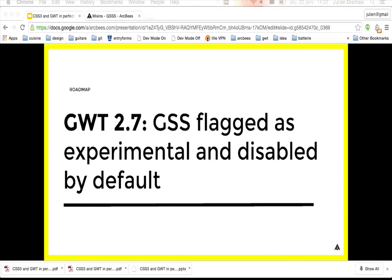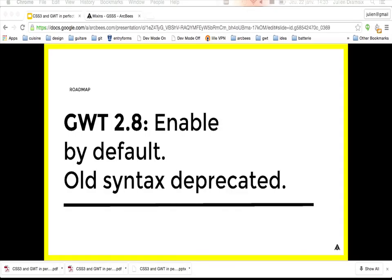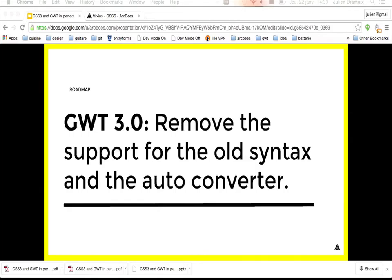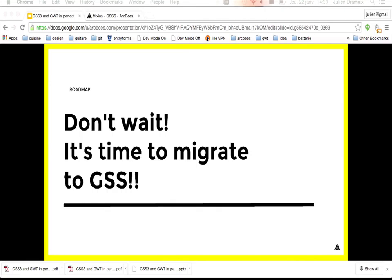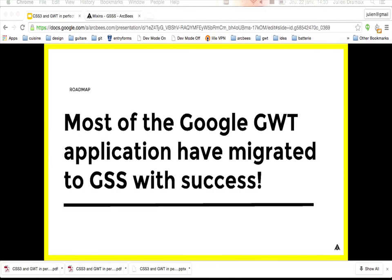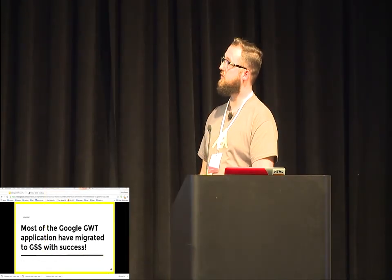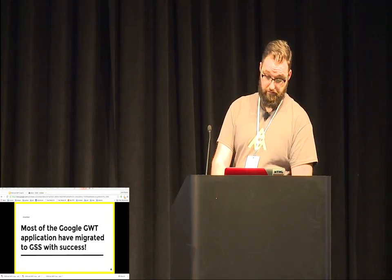The roadmap: GSS support was added in Grid 2.7, flagged as experimental and disabled by default. In Grid 2.8, GSS support will be enabled by default and the old syntax will be deprecated. In Grid 3.0, support for the old syntax and the auto-converter will be removed. So don't wait — it's time to migrate to GSS. Most Google Grid applications have already successfully migrated to GSS, which proves it is stable.